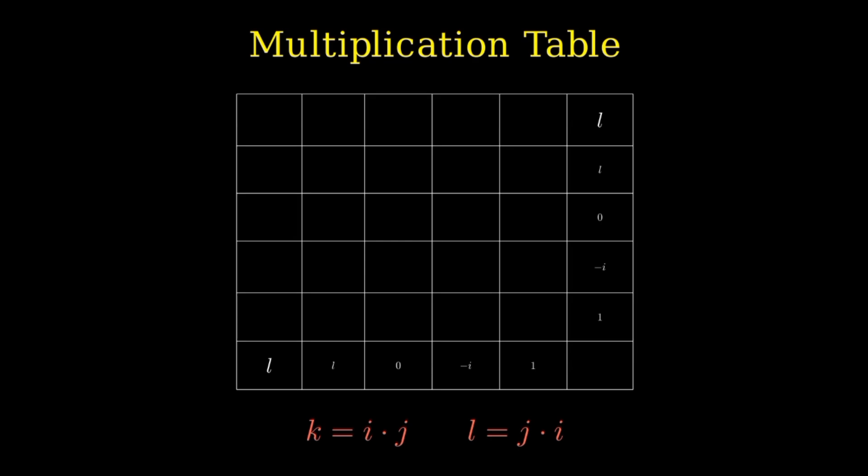Across the first row, one times anything gives you that same thing: one, I, J, K, and L. In the second row, which starts with I, I times I equals negative one, I times J equals K, I times K equals negative J, I times L equals zero.